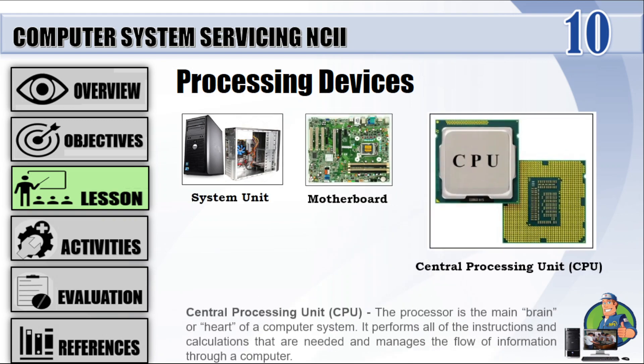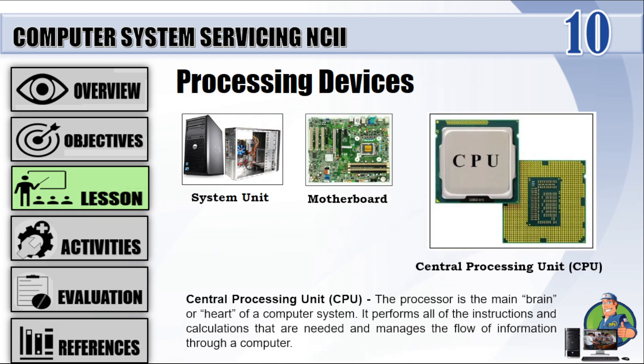Central Processing Unit (CPU): The processor is the main brain or heart of a computer system. It performs all of the instructions and calculations that are needed and manages the flow of information through a computer.